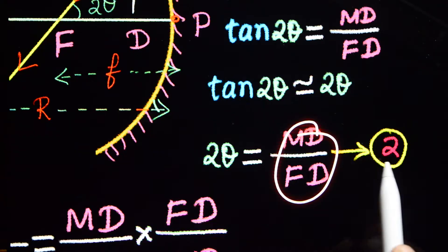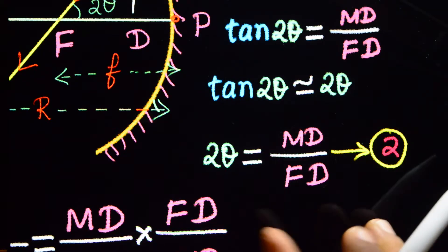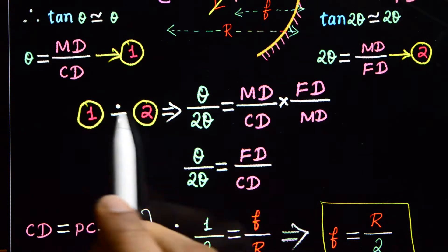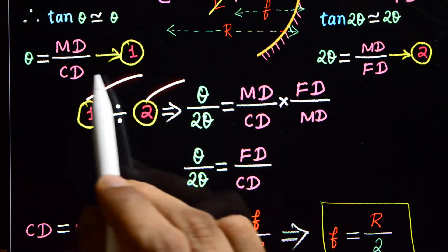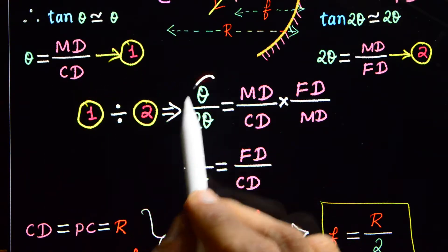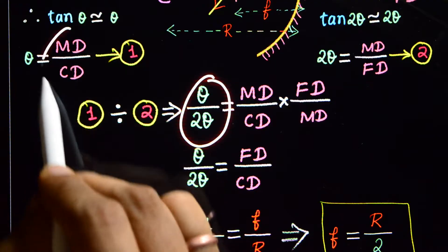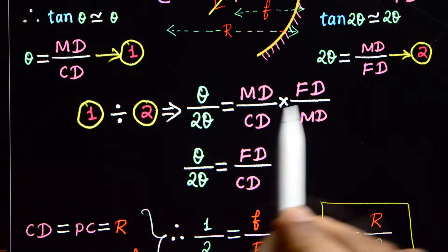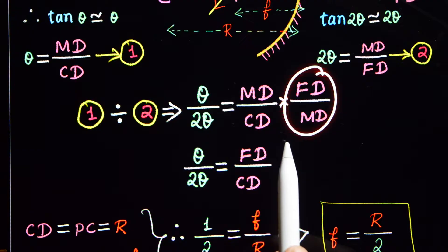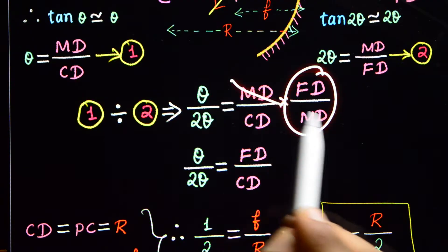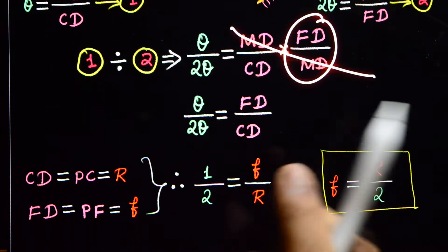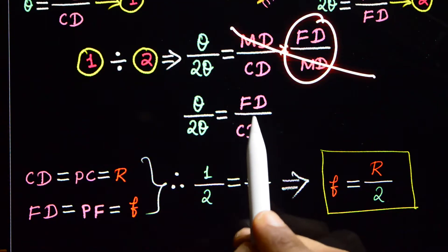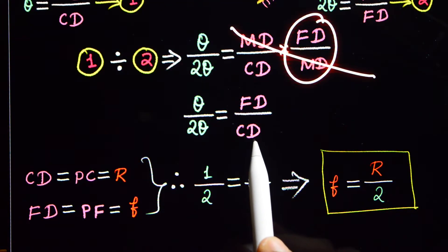Therefore 2theta equals MD divided by FD. That is our second equation. Now dividing equation 1 by equation 2: theta divided by 2theta equals FD divided by CD.